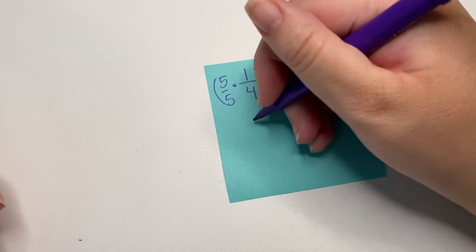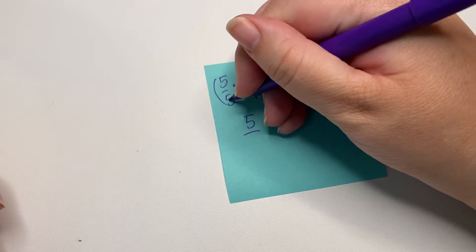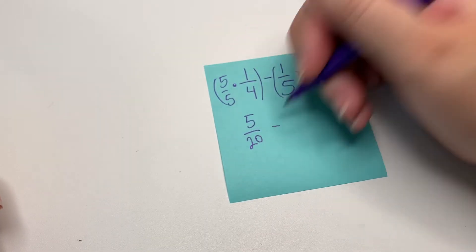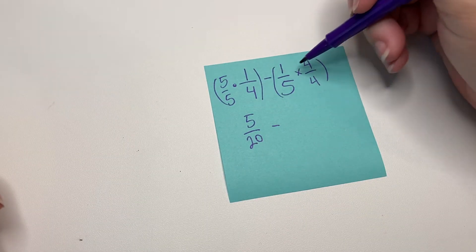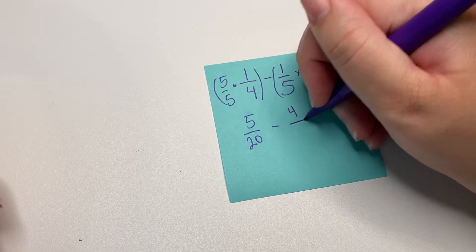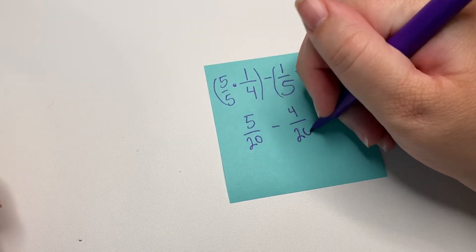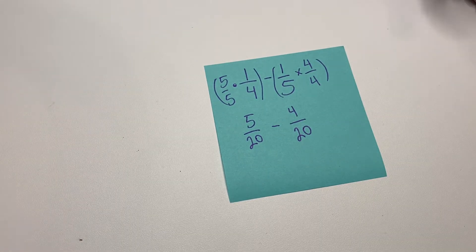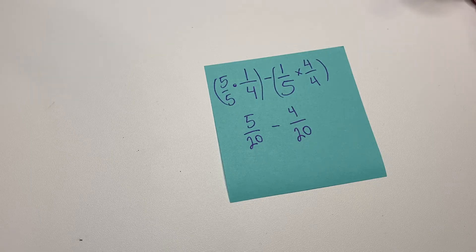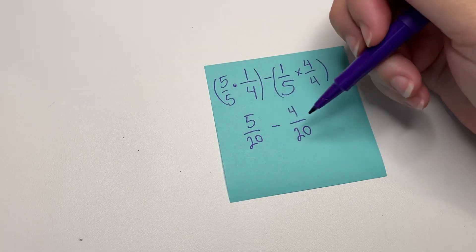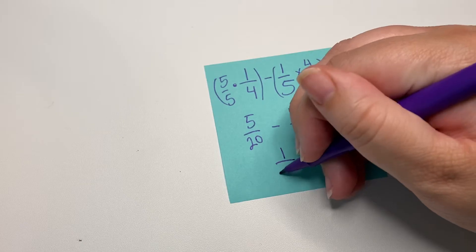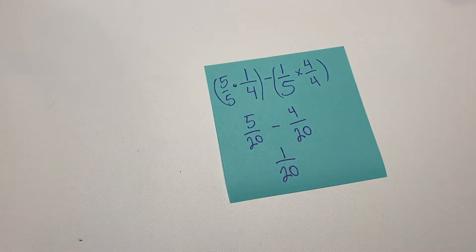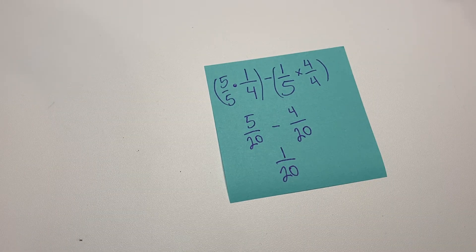Five times one is five. Five times four is 20. Still have our subtraction. One times four is four. And five times four is 20. Now we can subtract the numerators and keep the denominator. So five minus four is one. And we keep 20 as our denominator. Okay, not so bad.